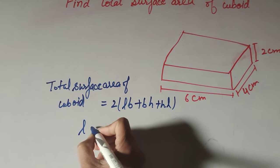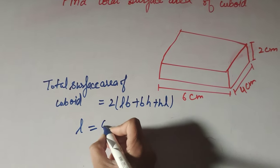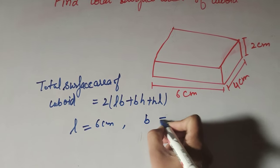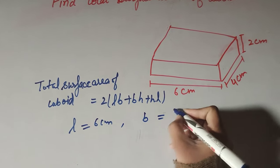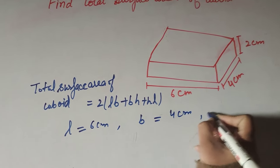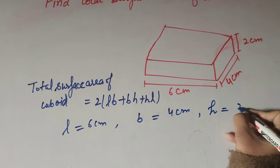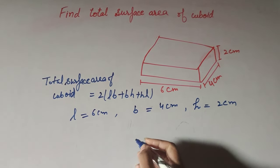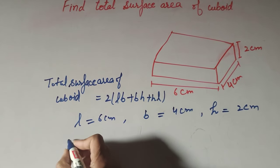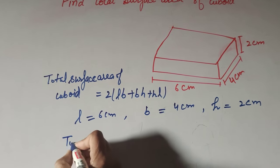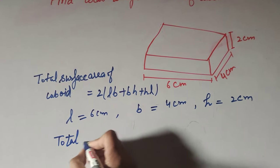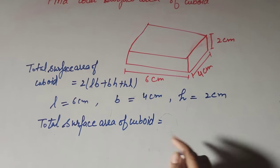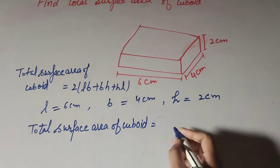The given values are: length l is equal to 6 centimeters, breadth b is equal to 4 centimeters, and height h is equal to 2 centimeters. Now we will find the total surface area of the given cuboid.